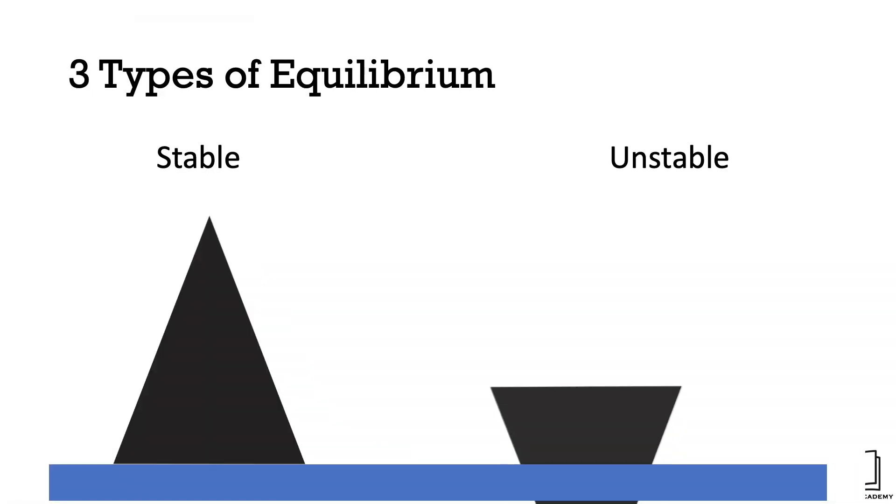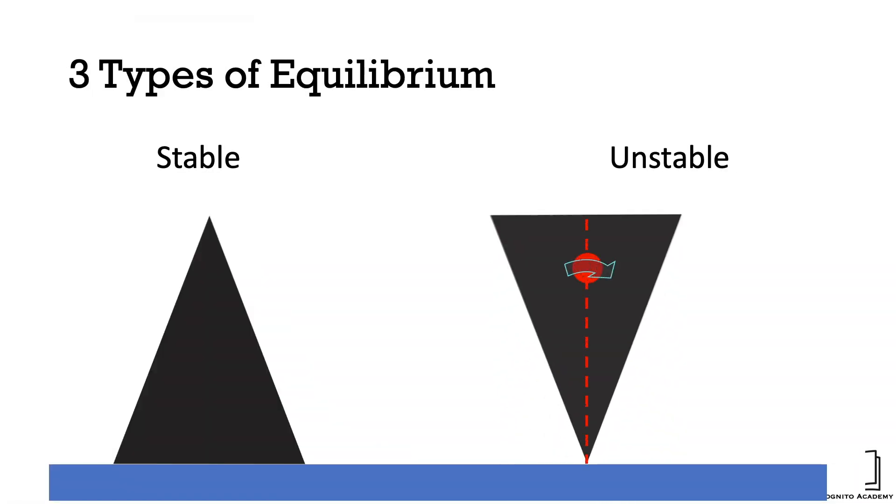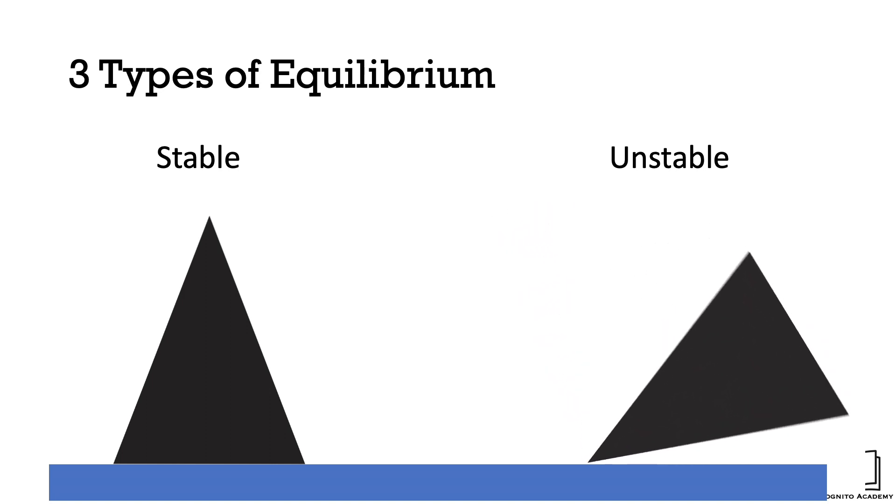Second, unstable equilibrium. We all know this cone right here is unstable, because a slight disturbance will cause it to fall. And that's because of its high center of gravity. And when disturbed, its center of gravity would drop to seek a lower height.